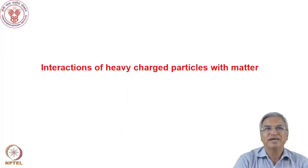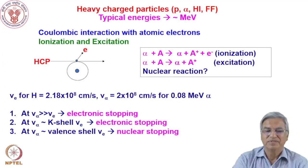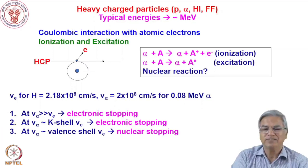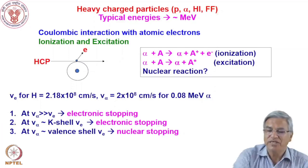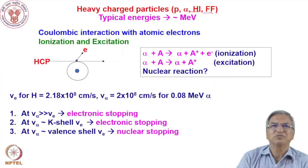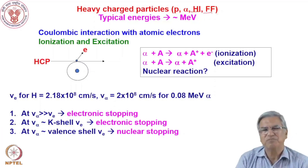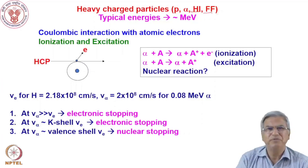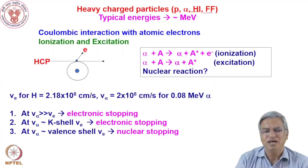Now let us come to the interaction of heavy charged particles with matter. As mentioned, heavy charged particles are particles associated with nuclei — protons, alpha particles, heavy ions (HI), and fission fragments. Californium-252, for example, produces fission fragments of masses 100–150 with charges of up to 20+. For simplicity, I will take examples of protons and alpha particles; the same relations hold for heavy ions and fission fragments.